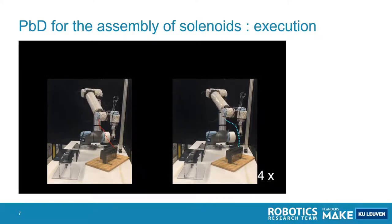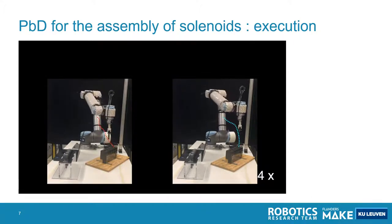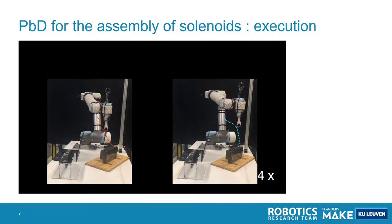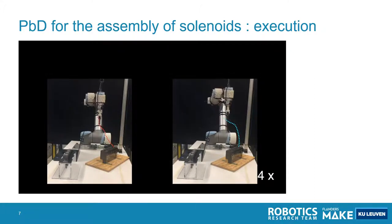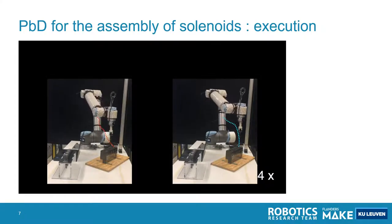After the demonstrations, we can use these motion models for execution. The motion models, which have variations, are combined with the vision constraints that determine the location of the block. The most similar trajectory to the demonstrations that still achieves the constraint is selected, and the robot moves according to that trajectory.